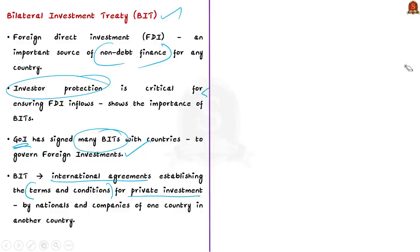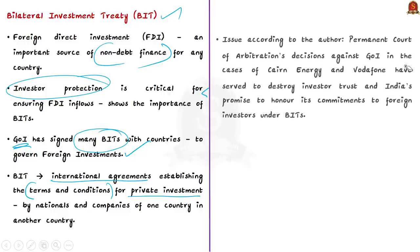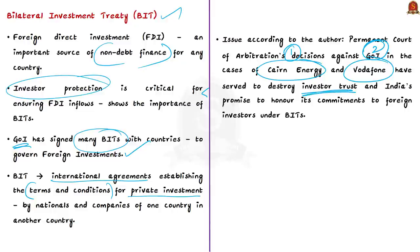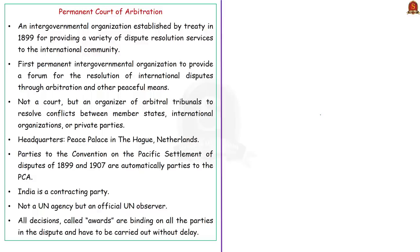The author talks about the Permanent Court of Arbitration's decision against India in two important cases: one with respect to Cairn Energy and the second with respect to Vodafone. According to the author, these decisions have destroyed investor trust and India's promise to honor its commitments to foreign investors under bilateral investment treaties. Before discussing the cases, let us understand the PCA briefly.